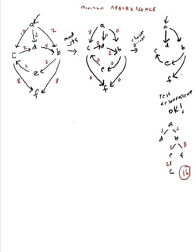That was one set of zero-cost choices. Since I have two zeros coming into D and two zeros coming into F, I actually have four possibilities altogether, so this was just one of them.